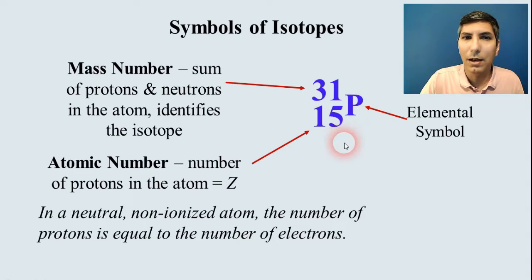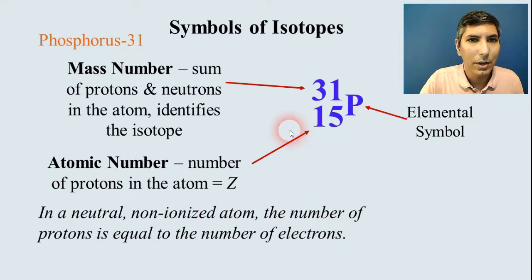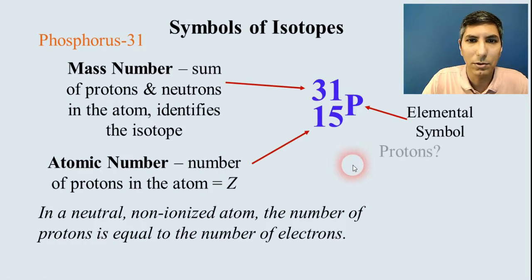If the question ever asks how many electrons, as long as we have a neutral atom and it's not ionized, the number of protons should be equal to the number of electrons. So in this case, we would call this isotope phosphorus-31. That's just its name. We use the name of the element with a dash and then the mass number. So it's phosphorus-31.